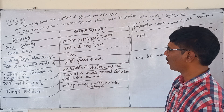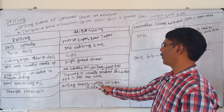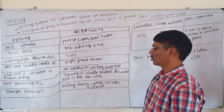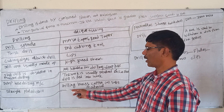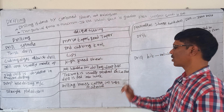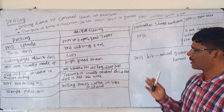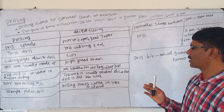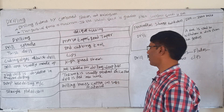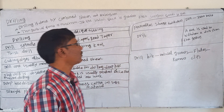Straight fluted drill can be used for drilling brass, copper, or soft materials. Usually the flutes are spiraled, but in some cases a straight fluted drill is used, which may be useful for drilling brass, copper, or soft materials.